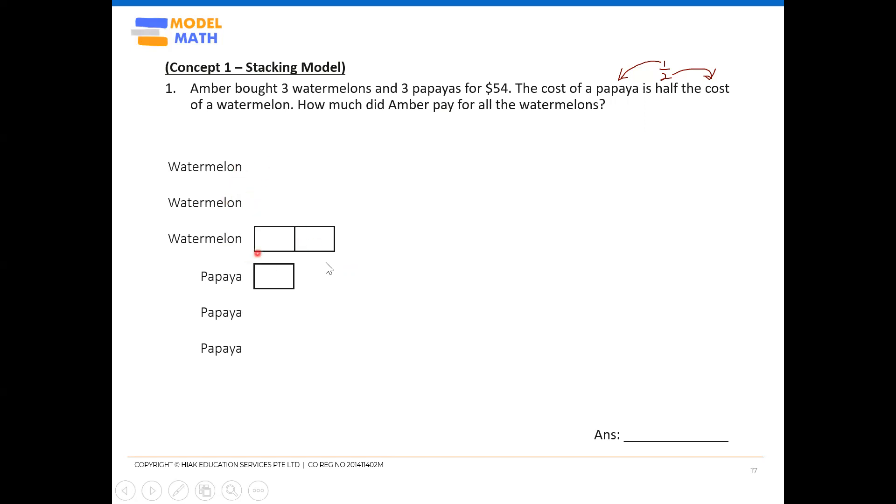Every watermelon costs two units. And every papaya costs one unit. So this is what a stacking model looks like. It really looks like you're stacking blocks, one on top of another.